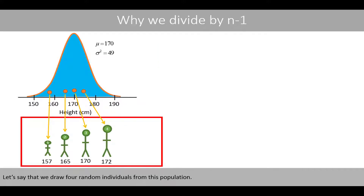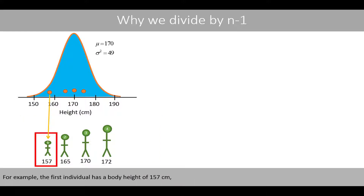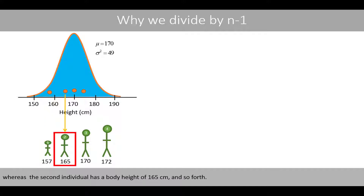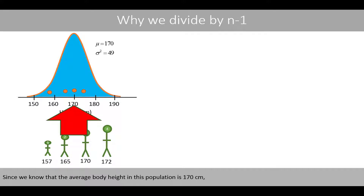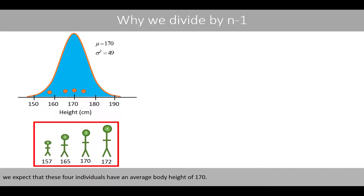Let's say that we draw four random individuals from this population. For example, the first individual has a body height of 157 centimeters, whereas the second individual has a body height of 165 centimeters. Since we know that the average body height in this population is 170 centimeters, we expect that these four individuals have an average body height of 170.